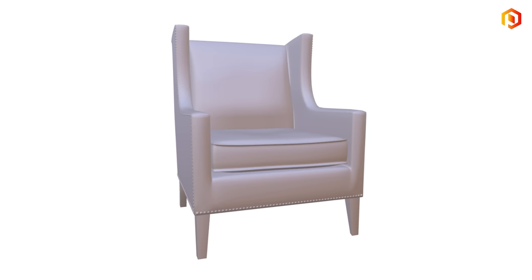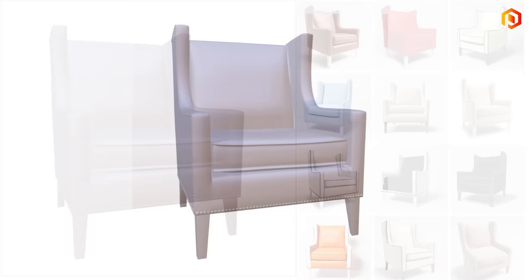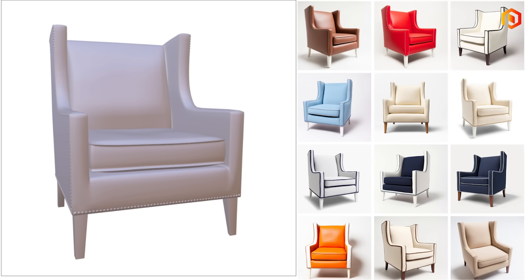Step two is the user describes the type of design they're looking for. For example, a text prompt like 'leather chair with wooden legs.' The AI then takes the 3D model and generates multiple variations of what it would look like with that text prompt — showing five to eight different images of that chair textured in different leathers, colors, and patterns.